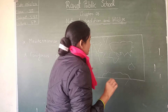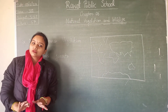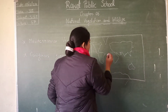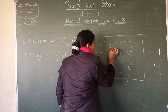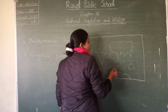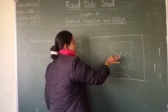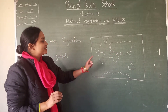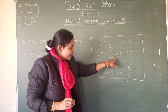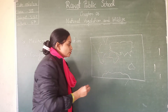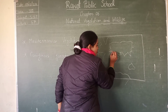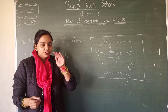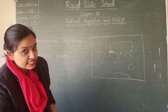There are seven continents and four oceans. Let's see where the Mediterranean Sea is located using a rough diagram. This is Europe, and this part includes France, Spain, and Italy. Here is Africa, and here is Europe. The portion between Africa and Europe is called the Mediterranean Sea.